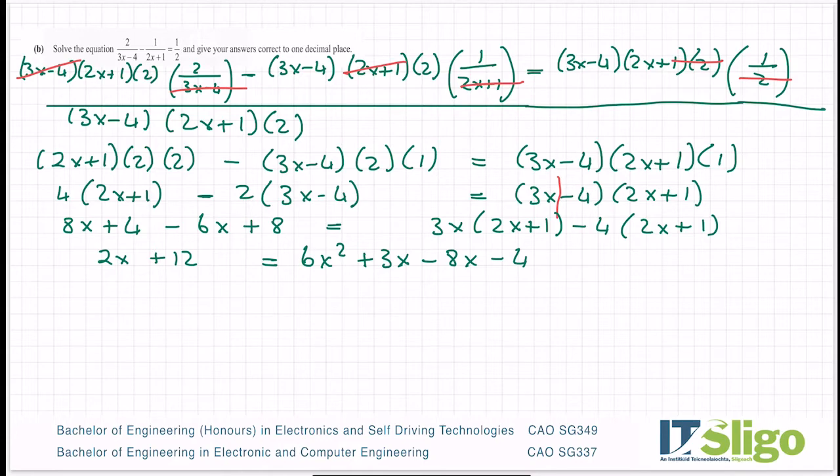I can see a quadratic forming so I'm going to bring these two pieces over to the right. Whether I bring all to the right or all to the left doesn't matter. I have plus 3x minus 8x minus 4 minus 2x minus 12. Make sure you change the sign of these when you bring them over. Equals 0. And let's tidy up. So I have 6x squared. I have plus 3 minus 5 minus 2. Minus 8 minus 2 is minus 10 plus 3 is minus 7x. And then I have minus 4 minus 12 is minus 16 is equal to 0.